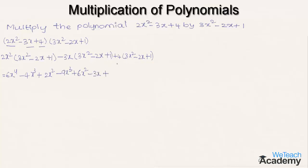Multiplying the constant term 4 with the group: 4 into 3x² gives 12x², 4 into minus 2x gives minus 8x, and 4 into 1 is plus 4.